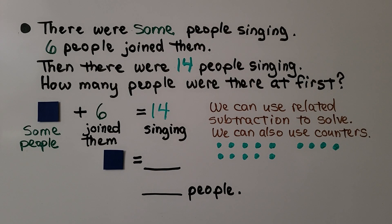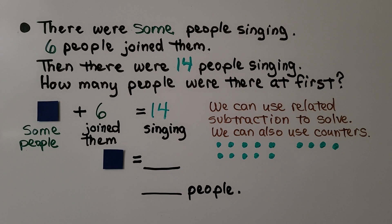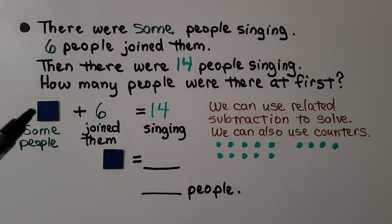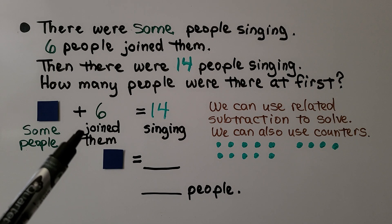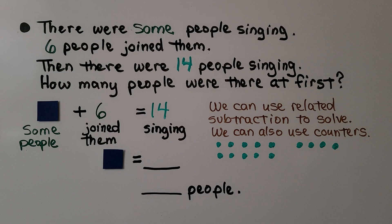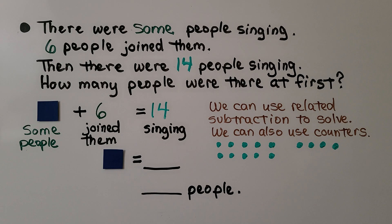There were some people singing. Six people joined them. Then there were 14 people singing. How many people were there at first? Be very careful — it's asking how many were there at first. We know some people were there, we don't know the number, and then six joined them. So we have some people plus six more equals 14 people singing. We can use related subtraction to solve: 14 minus six is equal to some number.